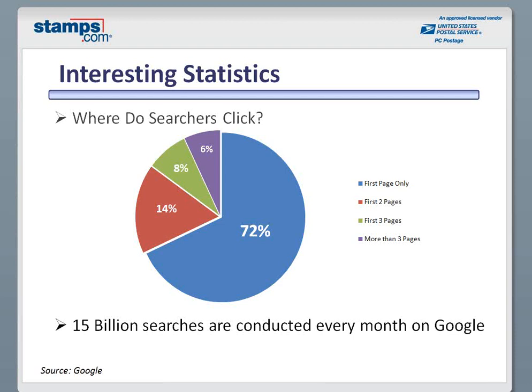Another important fact: 15 billion searches are conducted every month on Google. You can see there's a lot of activity, and you should definitely have some sort of SEO strategy so that you can at least be indexed and move forward with a long-term strategy.